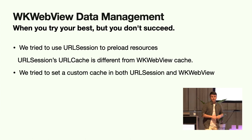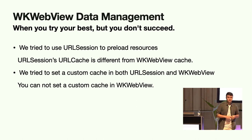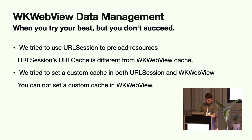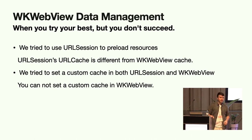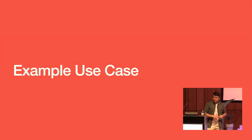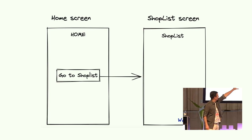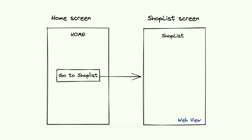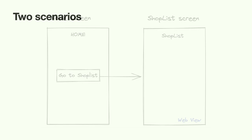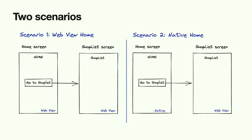We explored some other approaches and found an HTML tag called 'link' that can help us. Preload strategies in WK WebView — to help explain this, I'll show you an example. We have two screens: Home screen and ShopList screen. The ShopList screen is a WebView and we want to preload some resources in ShopList before we show or push this screen. There are two scenarios: the first is when home is a WebView, and the second is when the home is a native screen.